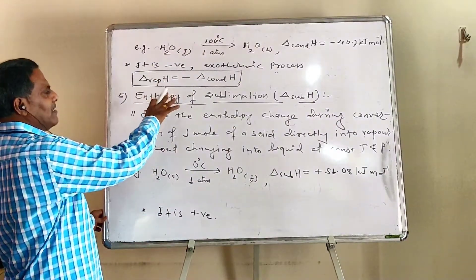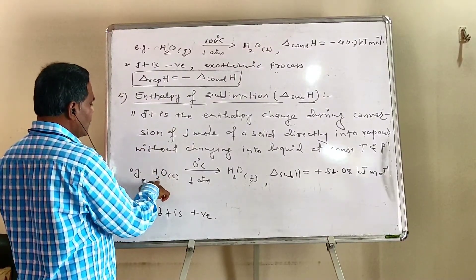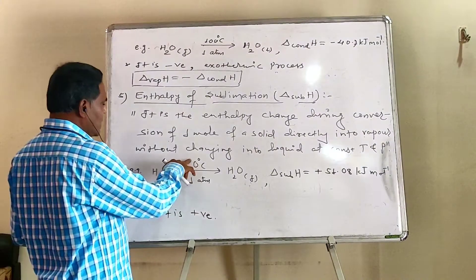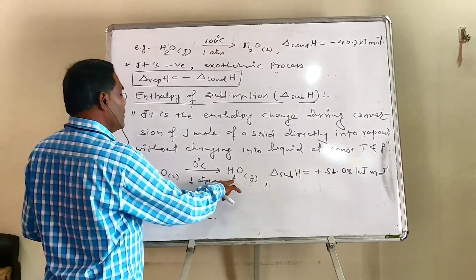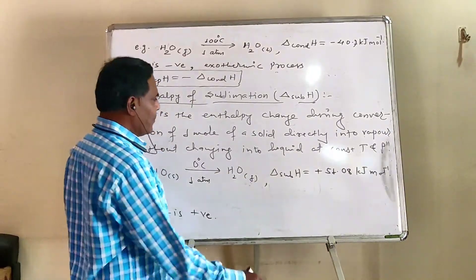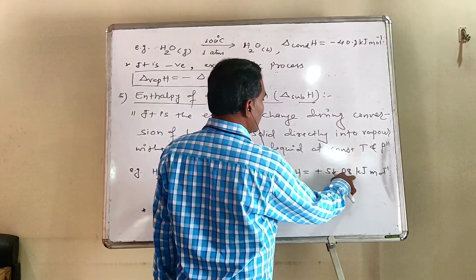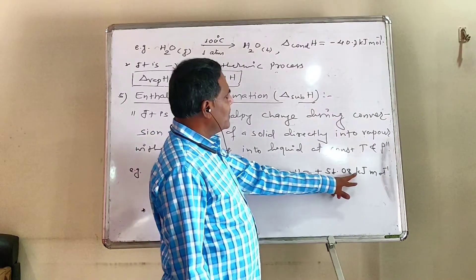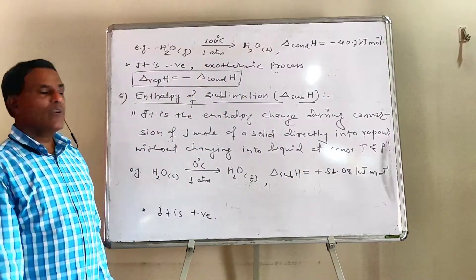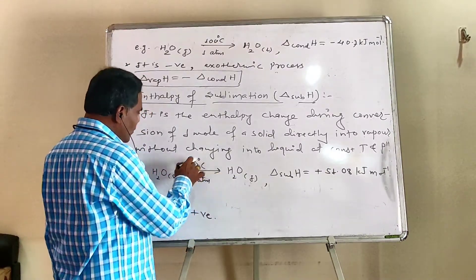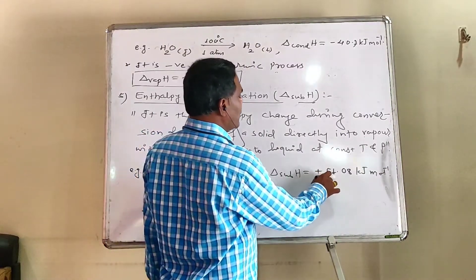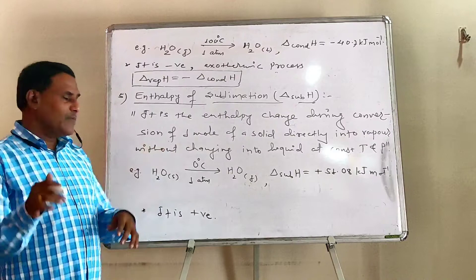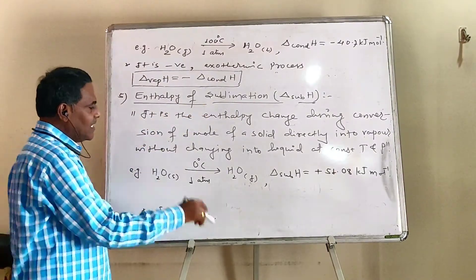Example: consider conversion of one mole of solid ice directly into gaseous phase. If we take one mole of solid ice at zero degree Celsius and one atmospheric pressure and convert it into vapour phase in the form of steam, the enthalpy change is plus 51.08 kJ per mole. As sublimation is an endothermic process, heat is absorbed, so enthalpy of sublimation of water is plus 51.08 kJ per mole — it is positive.